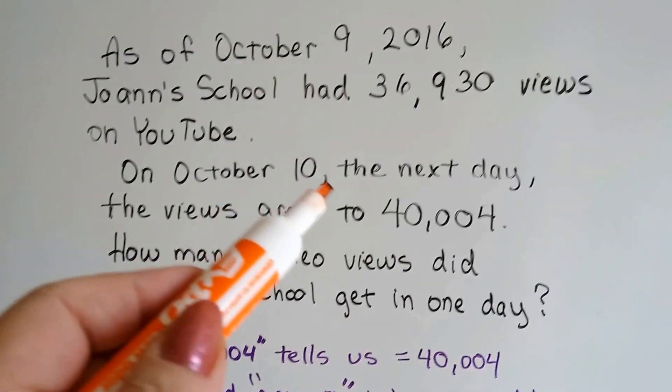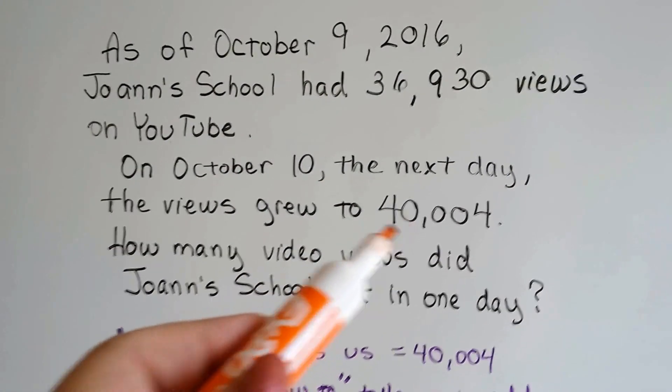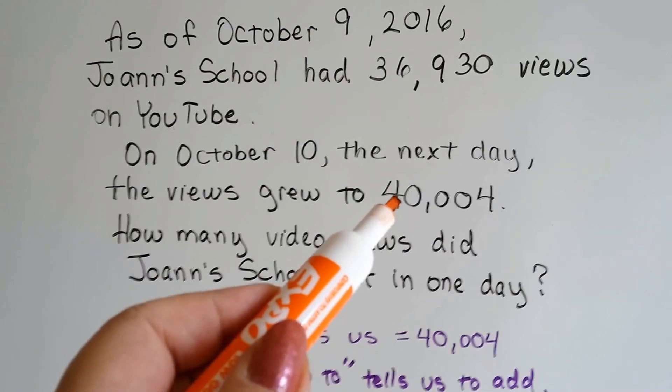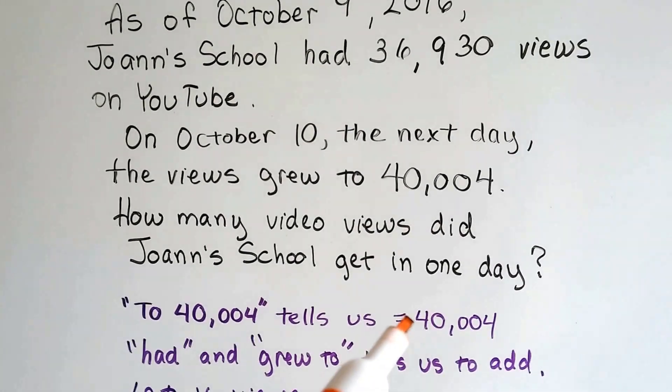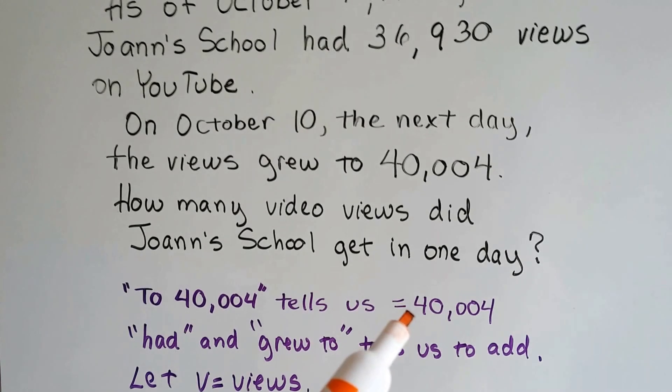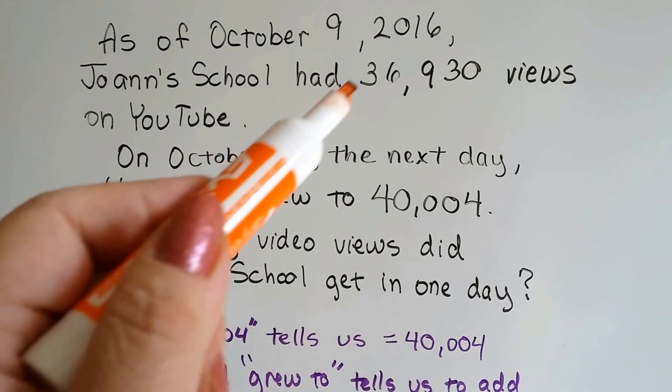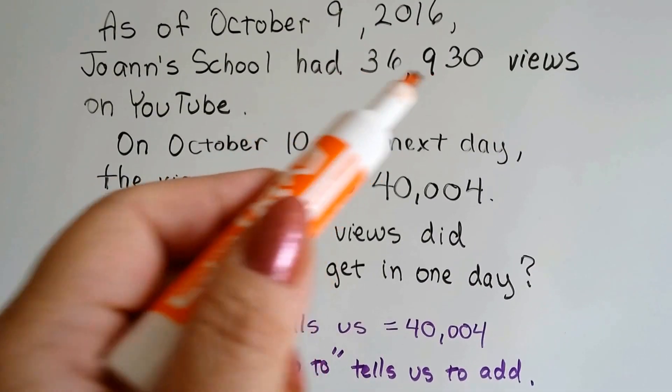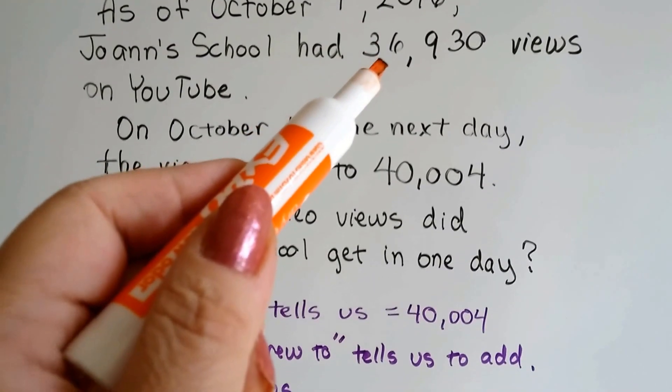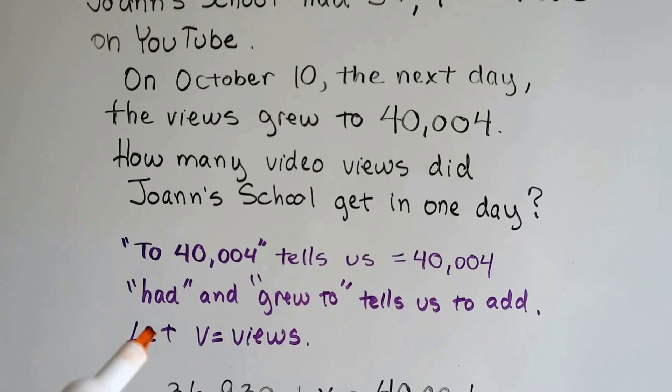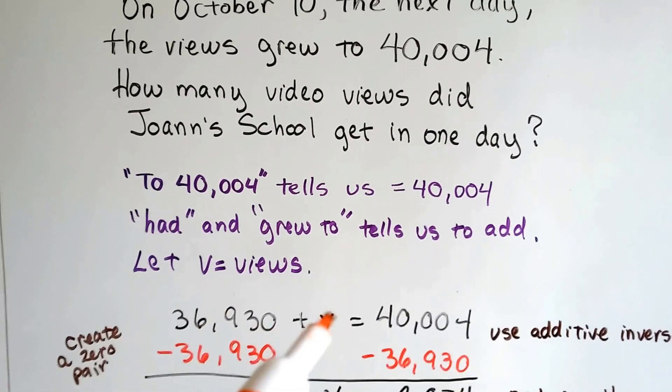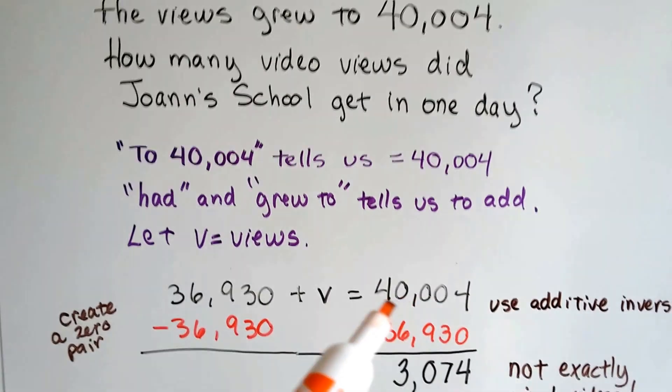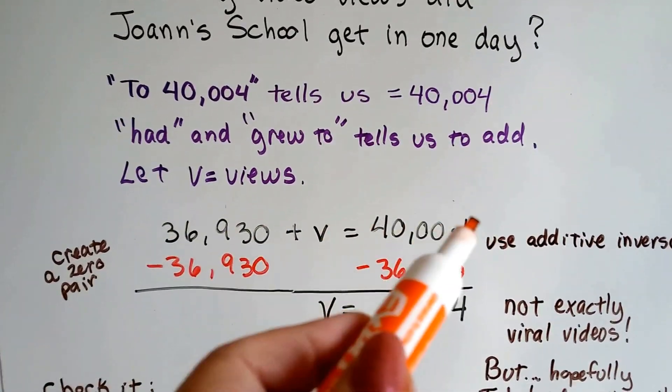So we see that there's a word to 40,004. That tells us that this is what it grew to. This is what it's equal to. That's our equals. So we know we can put an equal 40,004 for our equation. Had 36,930 views tells us that was the original amount. So we can take this, we can let v equal the views, add the v to the 36,930 and make it equal the 40,004. Now we have our equation.